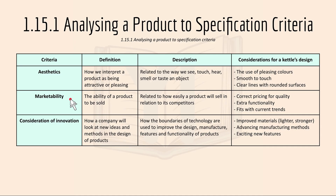Marketability is the ability of a product to be sold, and it's related to how easily a product will sell in relation to its competitors. For example, for a kettle, it could be the correct pricing for quality, extra functionality, and it fits with the current trends.